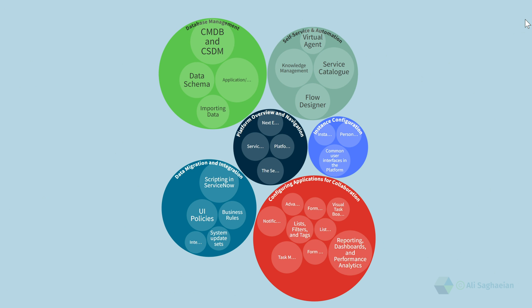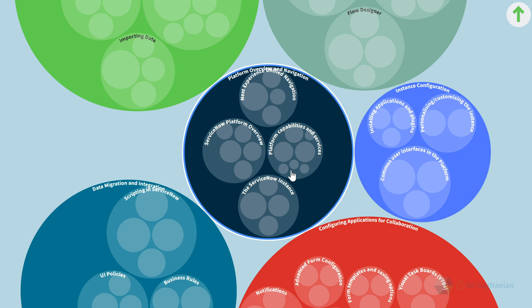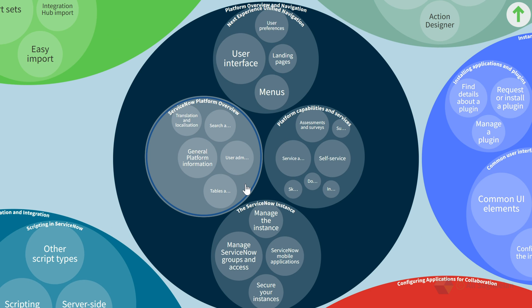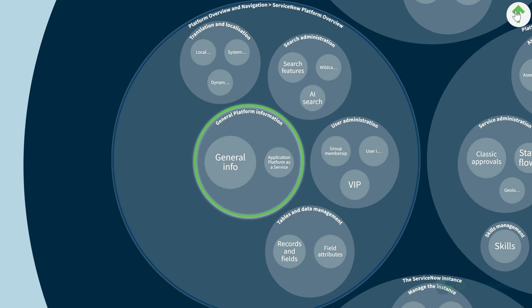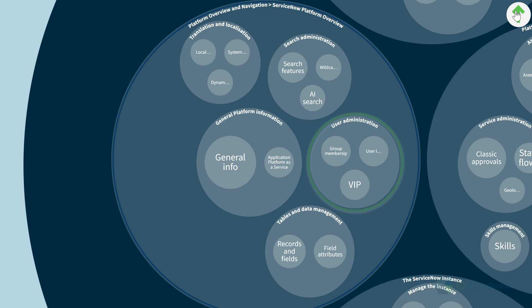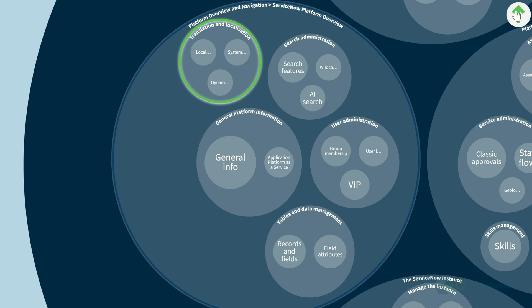The first subdomain is the ServiceNow Platform Overview. It covers general information about the platform. For example, ServiceNow is an application platform as a service that automates business processes across the enterprise. Some core features are user administration, tables and data management, search administration, translation and localization, and many other features and functionalities.